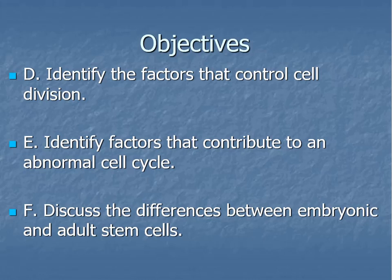So we've talked about mitosis and the cell cycle. Now we're on to the controlling factors of the cell cycle, and then we're going to talk about situations where that is considered abnormal. We'll identify factors that control cell division, identify factors that contribute to an abnormal cell cycle, and then we will talk about stem cells tomorrow.